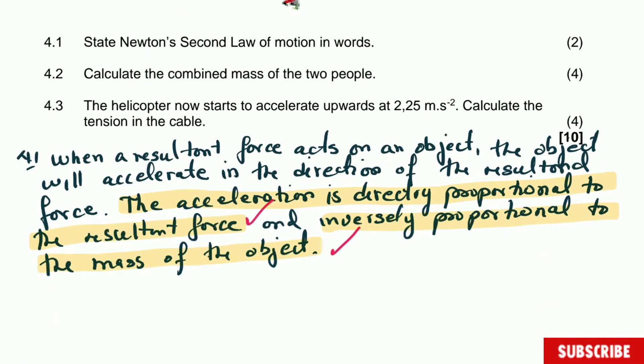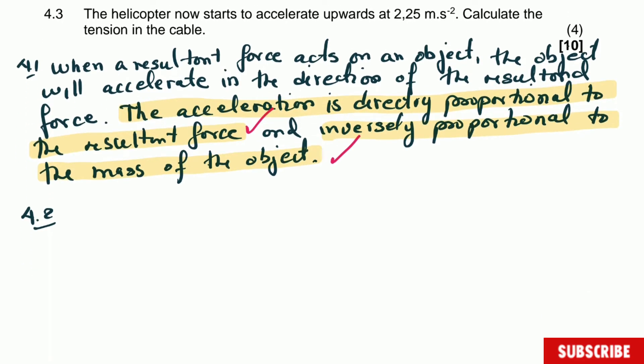Now there's something important here. These people are moving at constant velocity, so the correct law to apply would be Newton's first law. However, I see in the memo that they want you to write F_net equals ma. This is Newton's second law. In this question, it's supposed to be applying Newton's first law, but I'm going to write this one here because I don't know how you people work at your specific school.